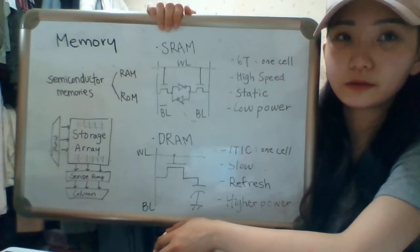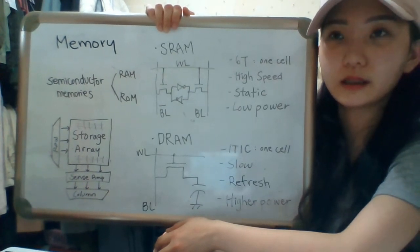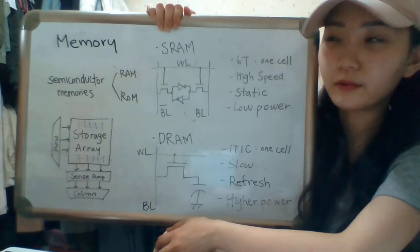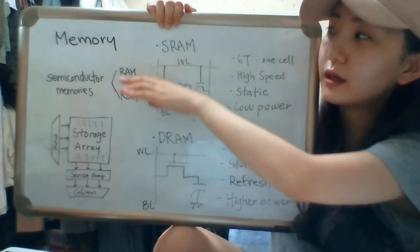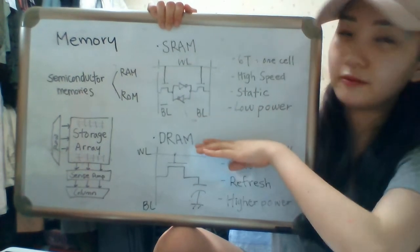It makes electrical and magnetic data as 0 and 1. Now we'll see about the kinds of RAM: SRAM and DRAM.